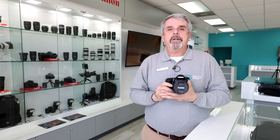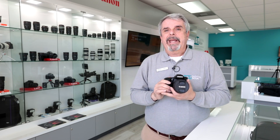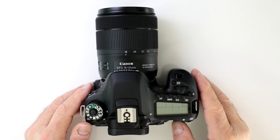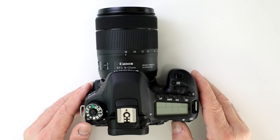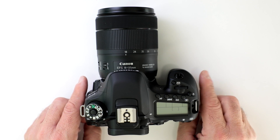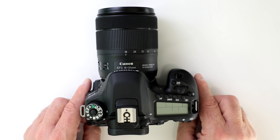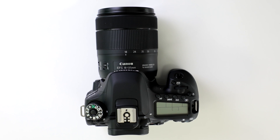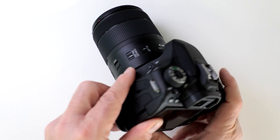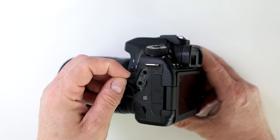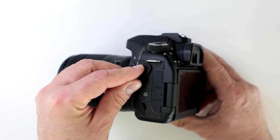Let's get started with the most asked questions for advanced users on the EOS 80D. Can I record to an external drive with my Canon EOS 80D? No, I'm afraid not — it does not have clean HDMI out. You are limited to recording onto your SD card, which is twenty-nine minutes and fifty-nine seconds. Does the 80D have a microphone input and a headphone jack? Yes, it does have both. This has become a favorite for videographers — there's your mic input and your headphone jack so you can monitor your audio.